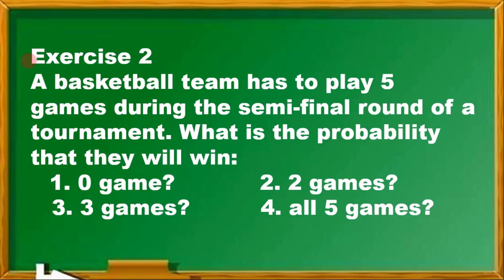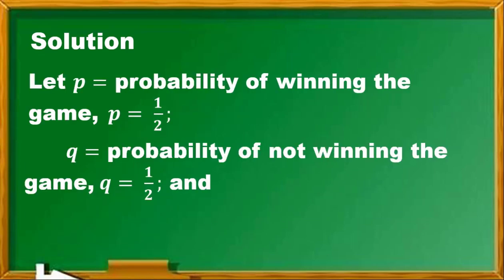Moving on to exercise number 2: A basketball team has to play 5 games during the semi-final round of a tournament. What is the probability that they will win no game? Number 2, 2 games. Number 3, that they will win 3 games. And number 4, that they will win all 5 games. Why do we have 1/2 for the probability of winning the game? Since in a game it's either win or lose, the probability of winning is 1 out of 2, and the probability of not winning is 1 out of 2 also. And we have N equals 5 games.